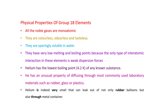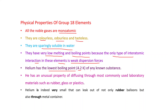Physical properties. All the noble gases are monoatomic — they exist only in atomic state. They are colorless, odorless, and tasteless. They are sparingly soluble in water. They have very low melting and boiling points because the only type of interatomic interaction is weak dispersion forces. Helium has the lowest boiling point, 4.2 Kelvin, of any known substance. Helium has an unusual property of diffusing through most commonly used laboratory materials such as rubber, glass, or plastics — helium is so small it can leak out of not only rubber balloons but also through metal containers.